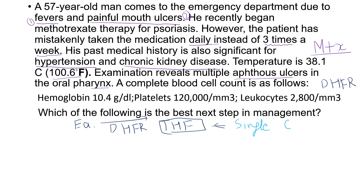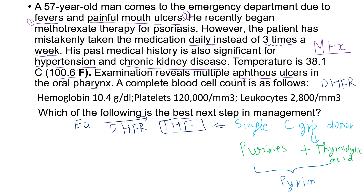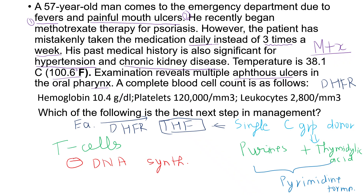Tetrahydrofolate is a single carbon group donor in the synthesis of purines and thymidylic acid, which in turn contribute to the formation of pyrimidines. So methotrexate basically inhibits DNA synthesis, and as an anti-psoriasis agent it acts through immunomodulatory effects on activated T-cells, also by inhibiting DNA synthesis.